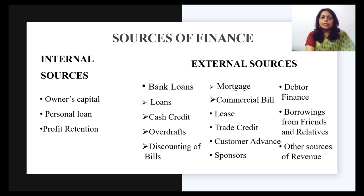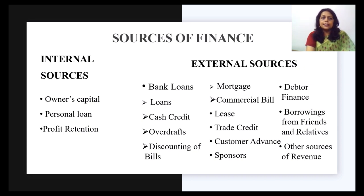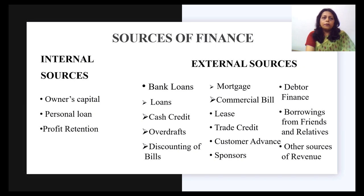Debtor finance is yet another external source of financing an event. This is an arrangement where the finance company provides cash in advance to the business against sales made — that is, invoices. Borrowings from friends and relatives is also an informal way of raising finance externally.